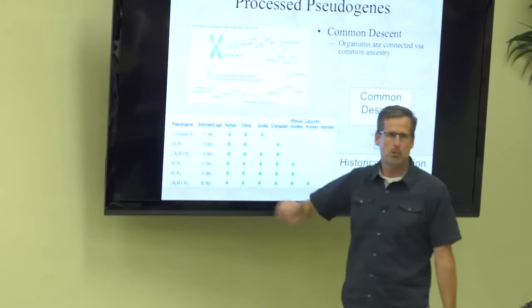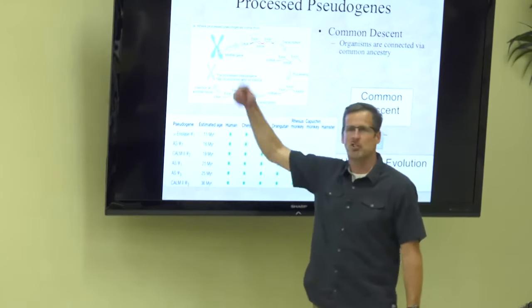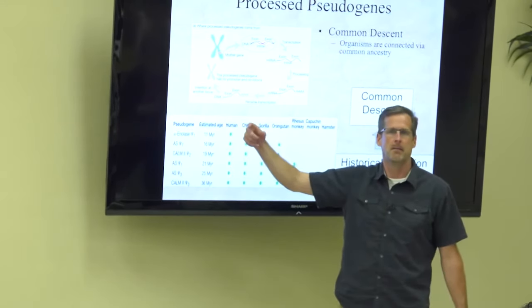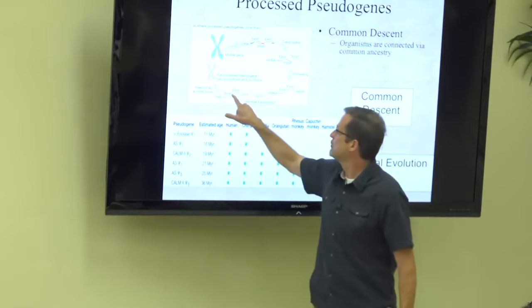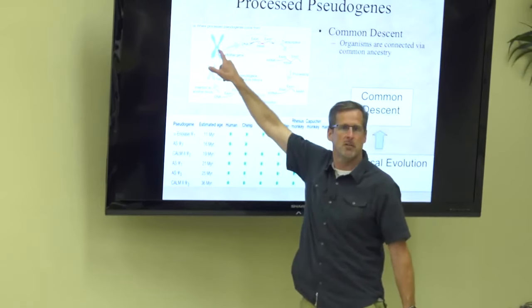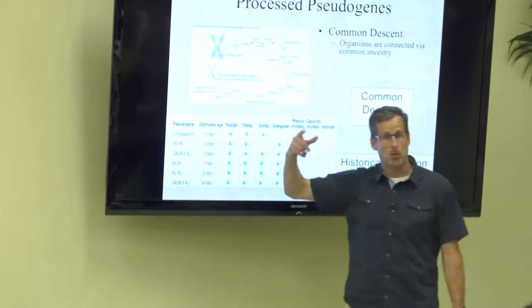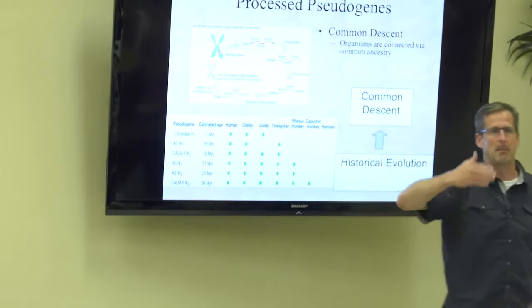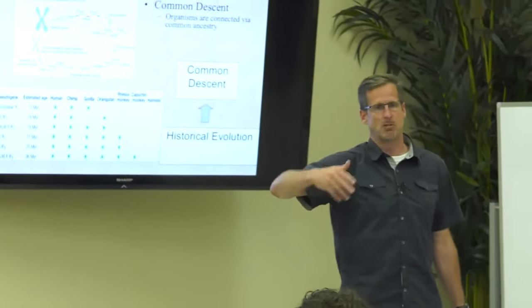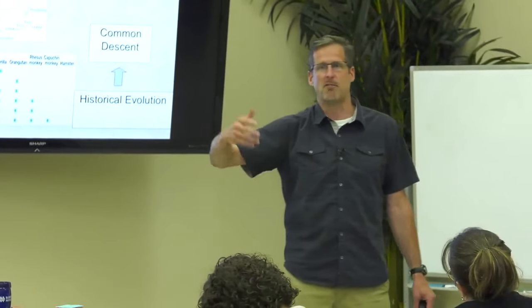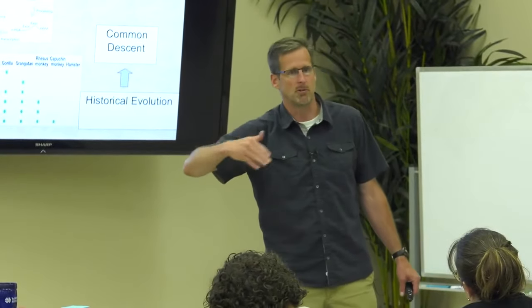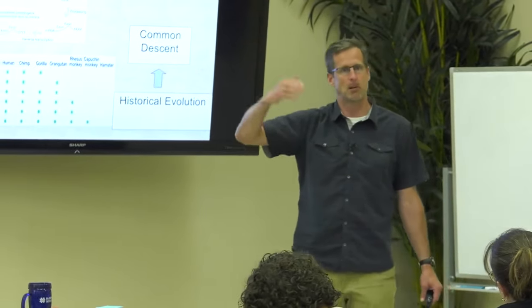Now, this processed pseudogene can't be used because the instructions to turn it on are not there. Those instructions to turn it on are only in front of the gene over here. So when it gets inserted over here, it's sort of useless. And what happens is over time, it starts to decay. Mutations will accumulate in it. They're not going to be selected for or against because they're neutral, so it accumulates mutations at a regular rate.